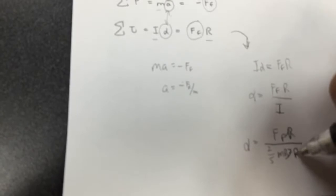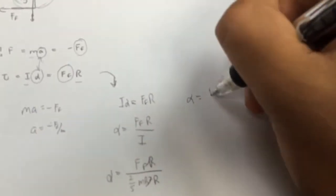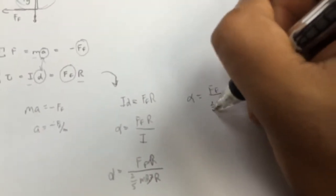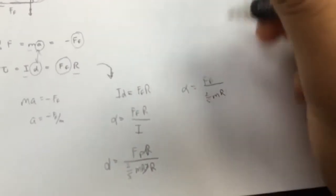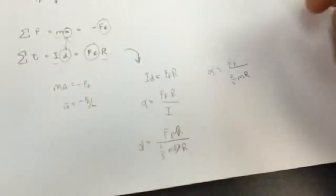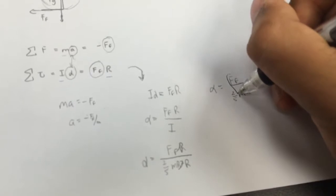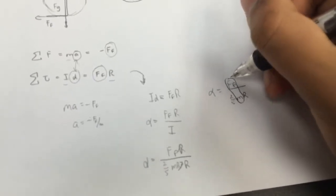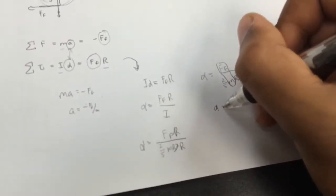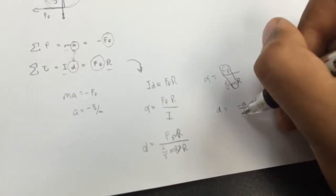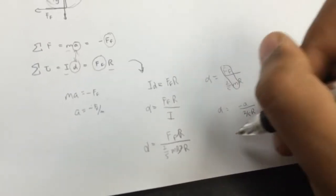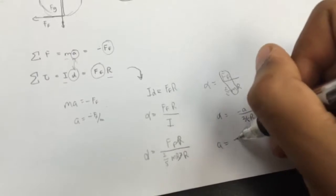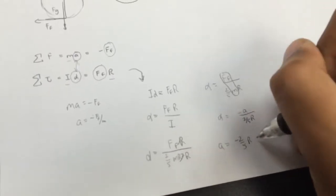So let's go ahead and solve for a relation between a and alpha. So we have that ma is negative ff. So a is negative ff over m. So that's pretty straightforward. Now let's solve this στ equation. So we have iα is ffr. So alpha is ffr over i. So alpha is ffr over 2/5 mr². And this cancels. So alpha is ffr over 2/5 mr. And see the similarity here? We have a is ff over m, negative ff over m. And we have an ff over m here. So we can substitute a into here, or rather negative a into here, so that we have alpha is negative a over 2/5 r. And we arrive at the relation that a is negative 2/5 r alpha.